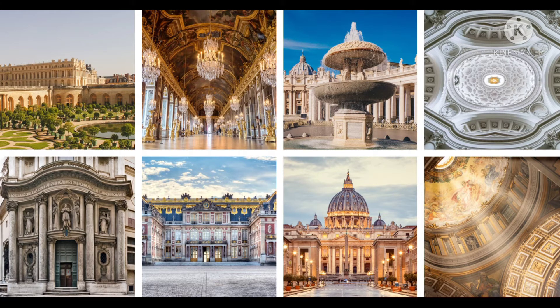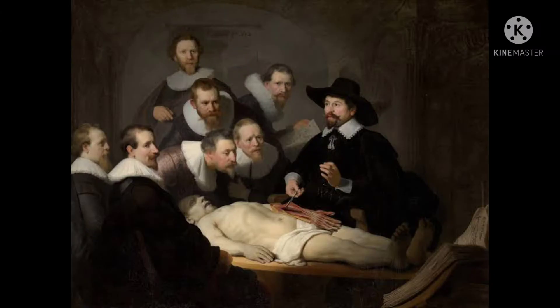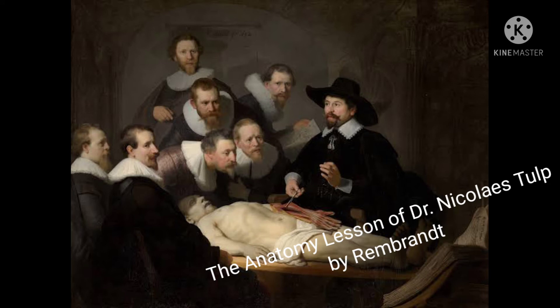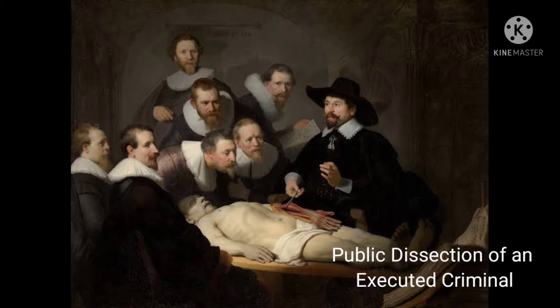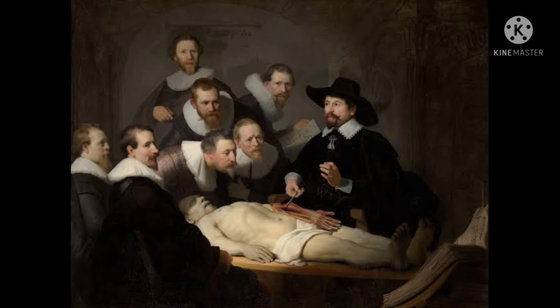A famous example of Dutch Baroque art is the Anatomy Lesson of Dr. Nicolaes Tulp. This oil painting was made in 1632 by Rembrandt. The scene depicted is the public dissection of an executed criminal conducted by the Amsterdam Guild of Surgeons the same year the painting was made.